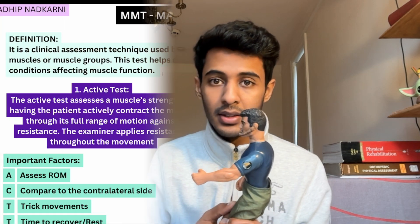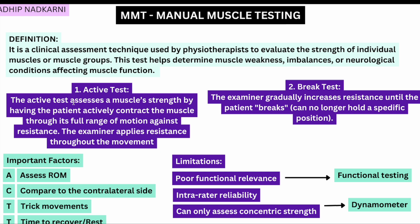Manual muscle testing can be divided into active test and break test. In the active test, I will ask Joe to create a shoulder flexion to check the strength of his shoulder flexors — I'll ask him to do a complete shoulder flexion. In the break test, I'll ask him to hold 90 degrees of shoulder position, then slowly apply pressure downwards and try to break that position.